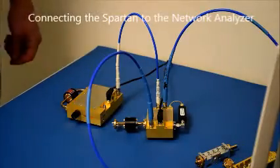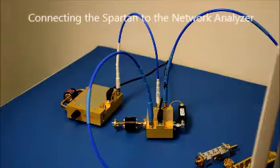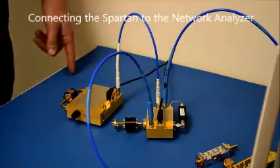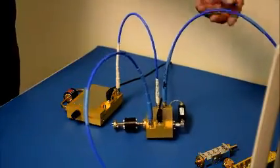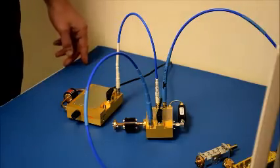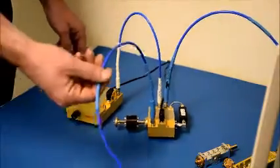To set up testing with the Spartan, we've attached it to our vector network analyzer. The setup uses two ports. We're driving the input from port 1 and have port 2 connected to the output of the Spartan receive module.